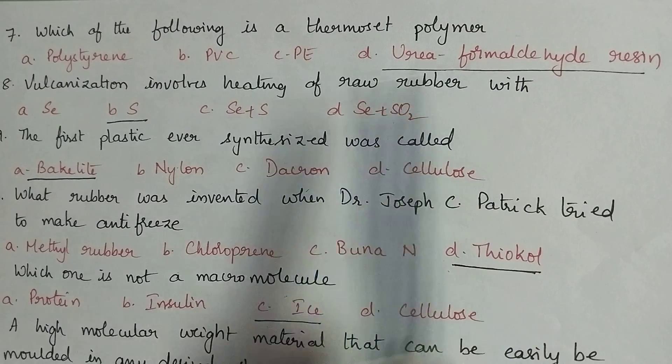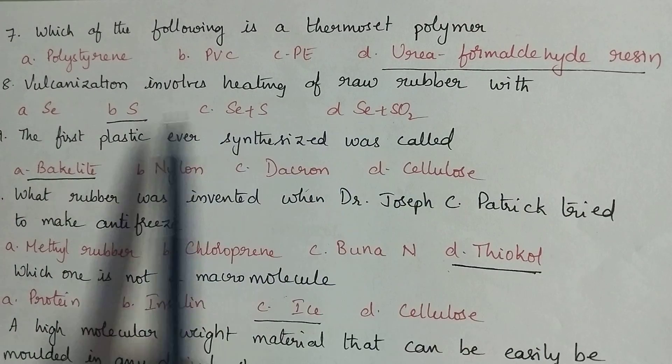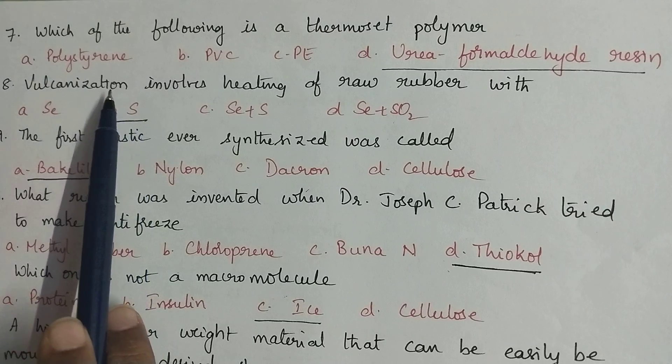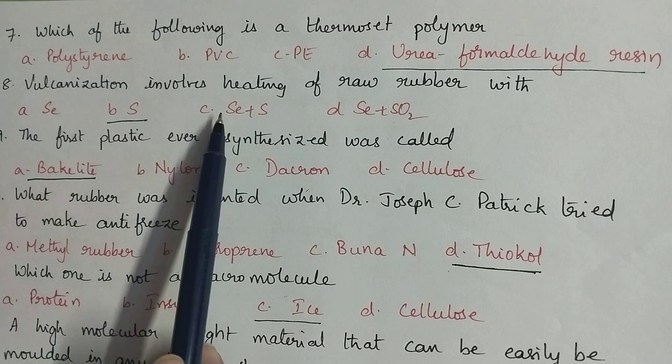Vulcanization involves heating of raw rubber with sulfur. During vulcanization raw rubber is heated with sulfur, with the result the strength and stiffness of the rubber increases.